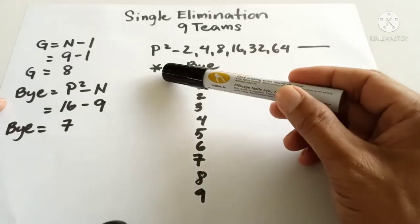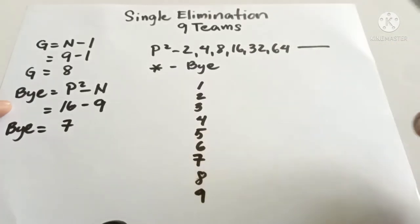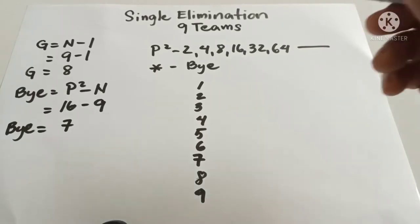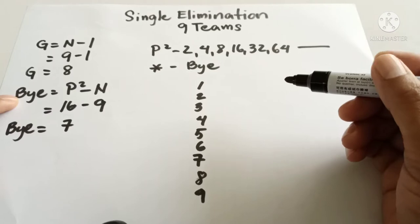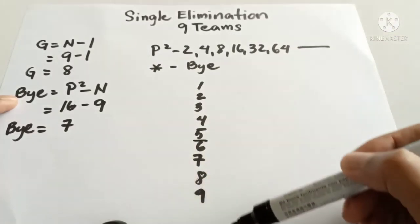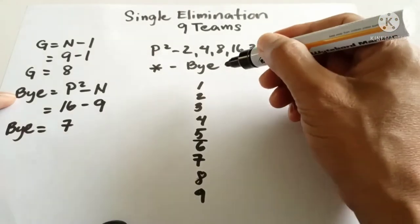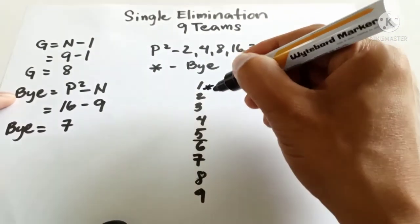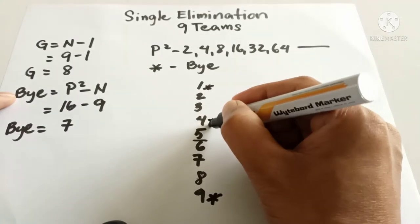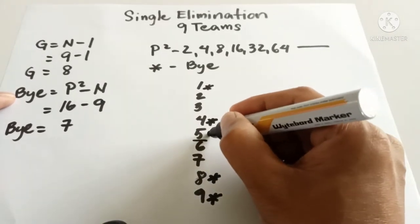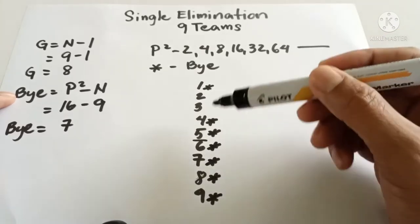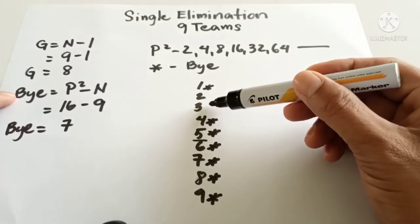Take note that we use the asterisk to identify the bye. Now let us place the byes properly. Since we have seven byes, we need to bracket the nine teams into two groups: between five and six for the upper bracket and the lower bracket. This means in nine teams we have two competing teams in the first round.